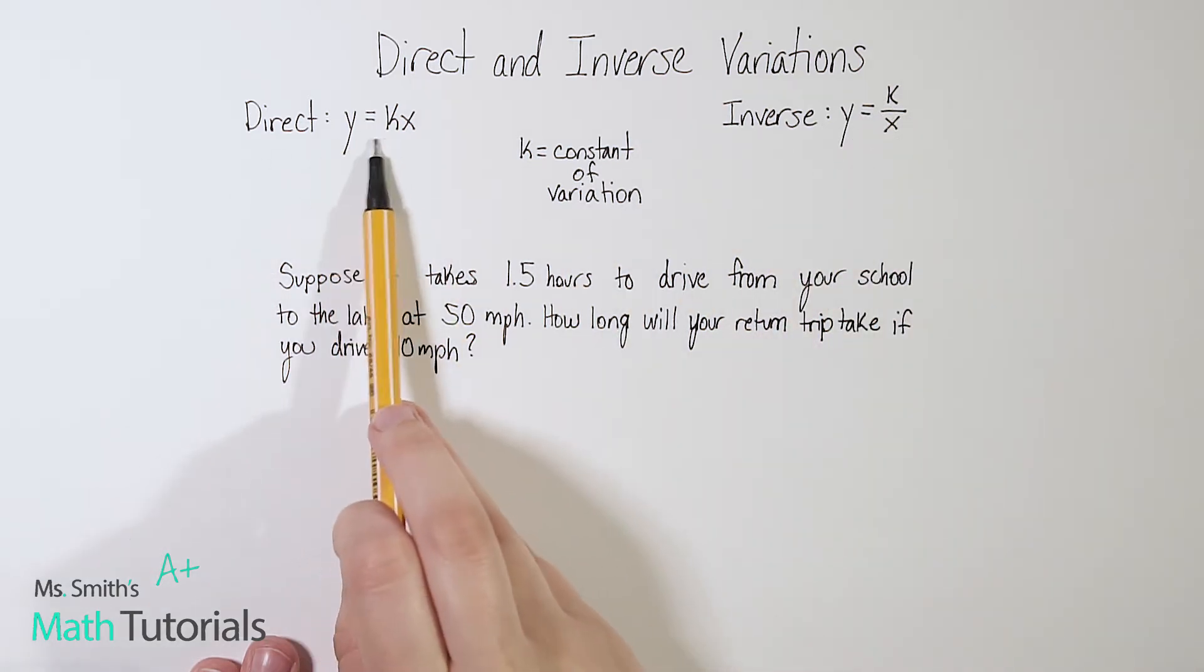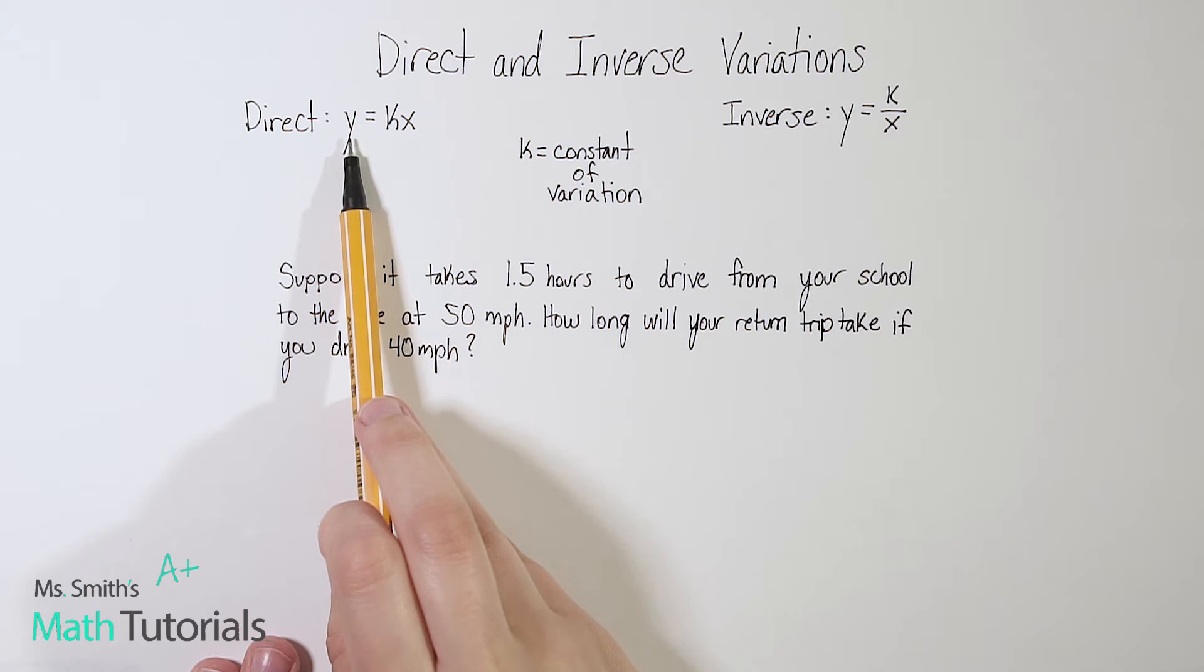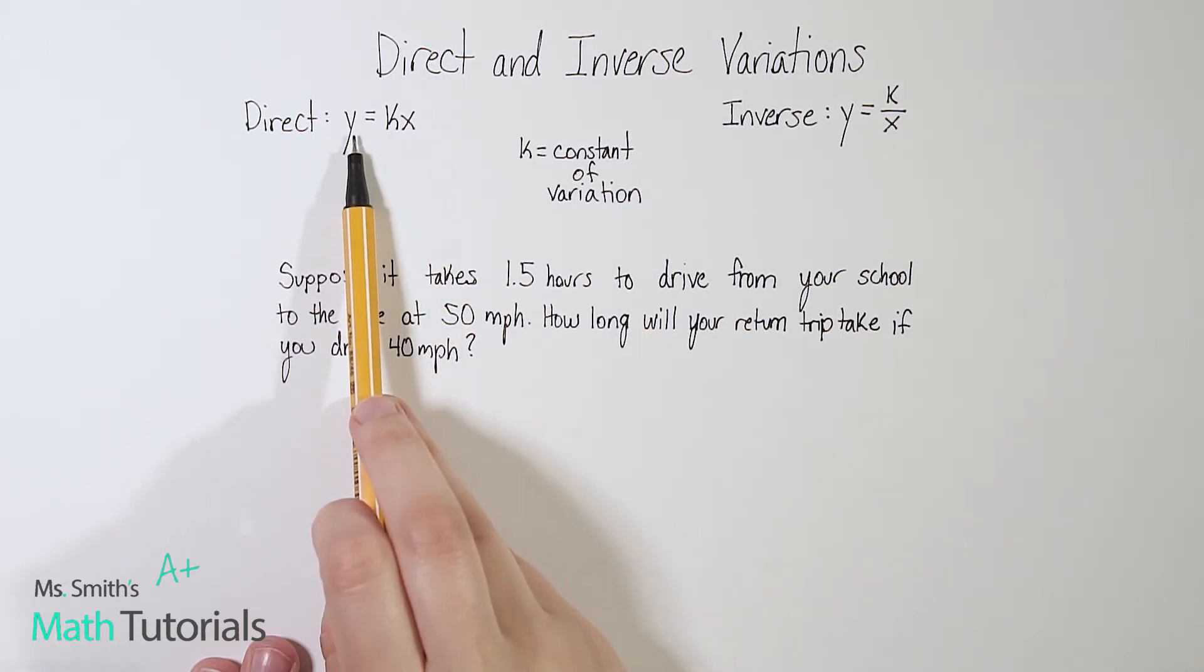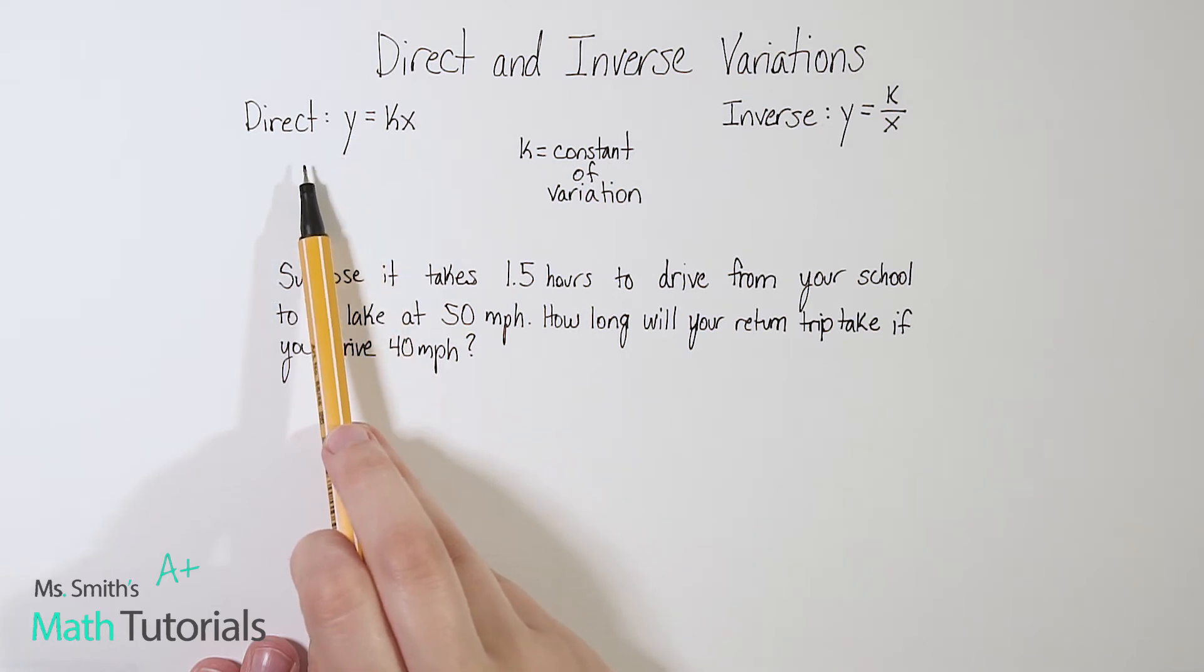And then our inverse would be y equals k divided by x. So this means that as y increases, x will also increase, or as x increases, y will also increase. It's phrased as y varies directly with x.